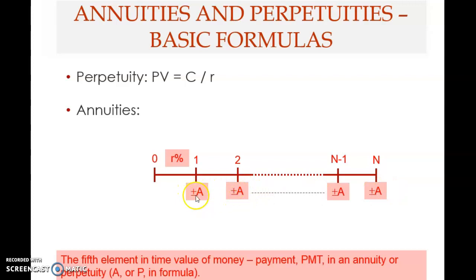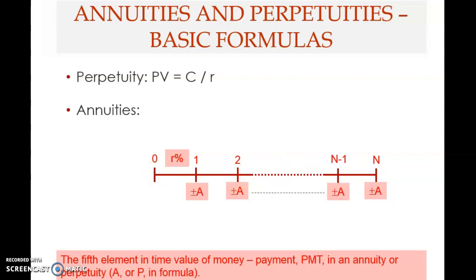The payment occurs at regular intervals — say end of year one, end of year two, and so on for n years. This introduces the fifth element in a time value of money problem. In chapter five we had four elements: interest rate, number of periods, present value, and future value. Here we add payment, or PMT — symbolized as A for annuity.